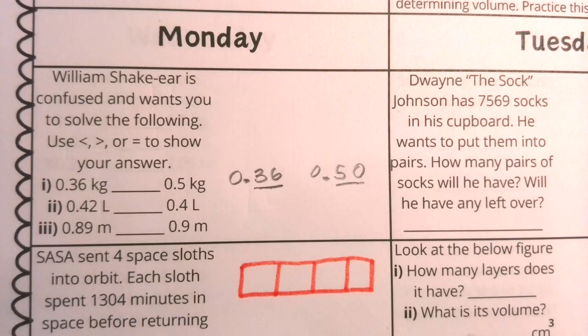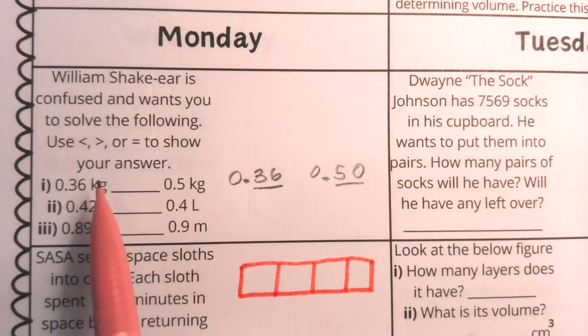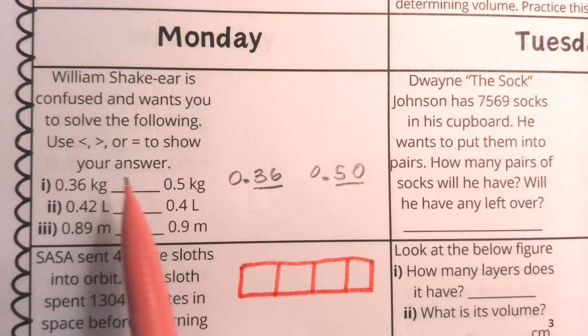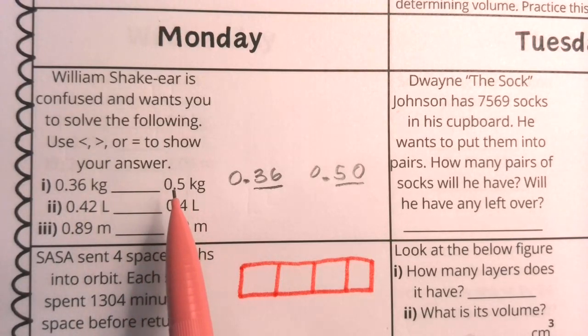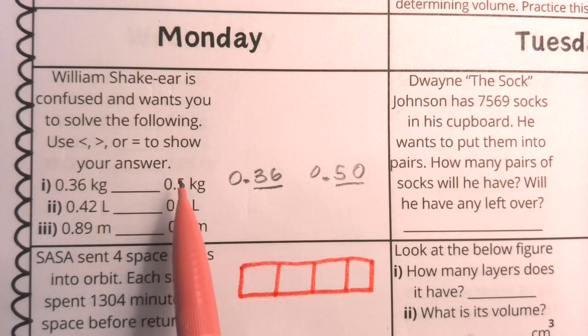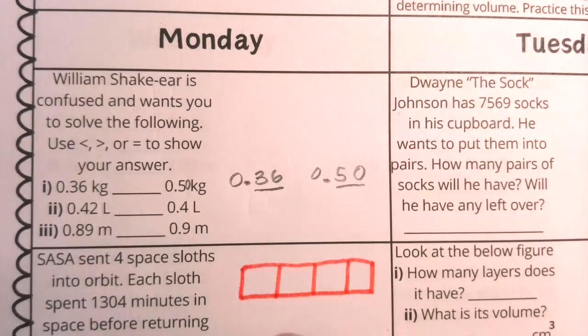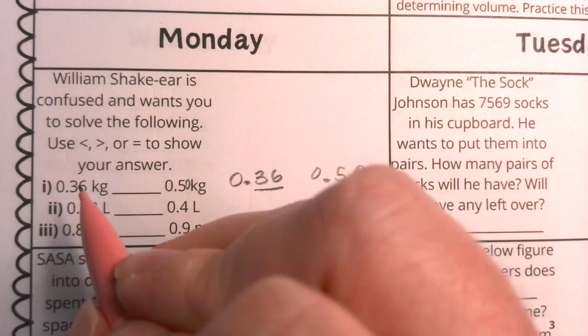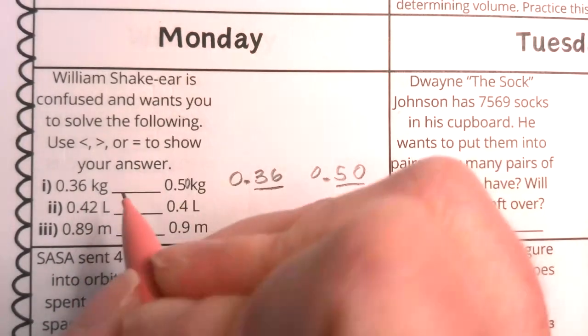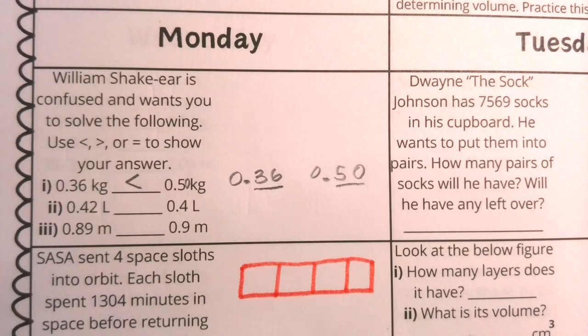A common misconception that kids will make is saying, this one has to be greater than this one because this is two digits, 36 versus 5, but no, it's all about the place value. This is 3 in the tenths, 6 in the hundredths. This is 5 in the tenths, and if I wanted to give it a hundredths, I would give it a zero. 36 is less than 50. So yes, 36 hundredths is less than 50 hundredths.